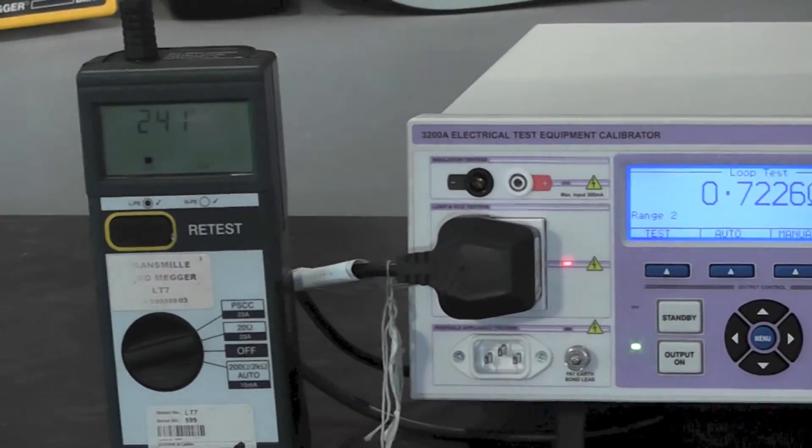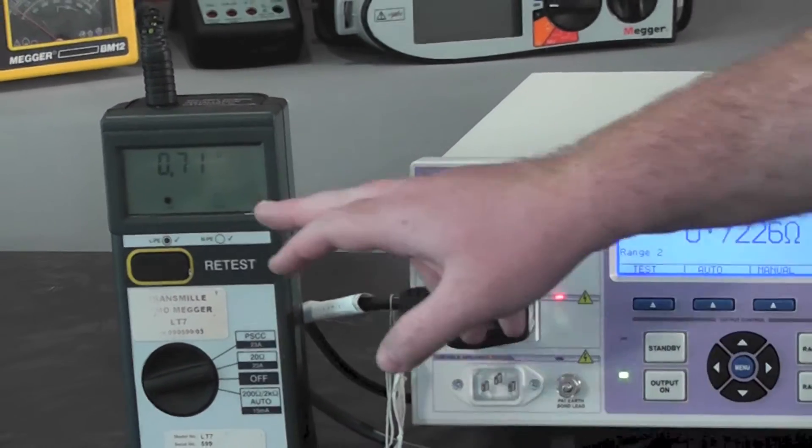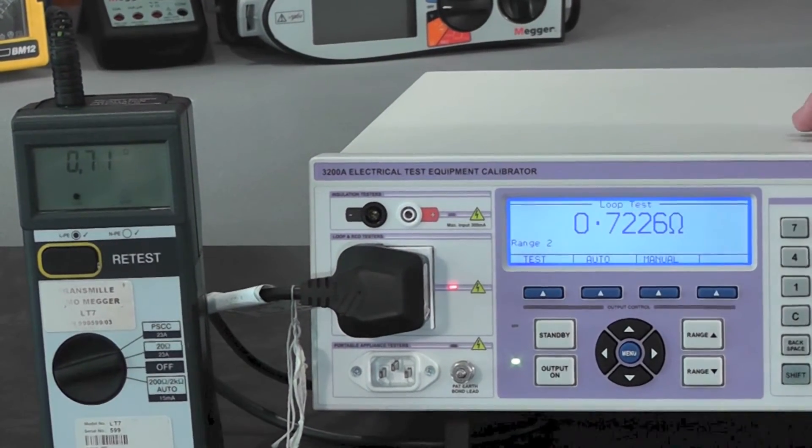After waiting for the loop tester to initialize, compare the recorded result from the loop tester against the indicated value on the 3200A.